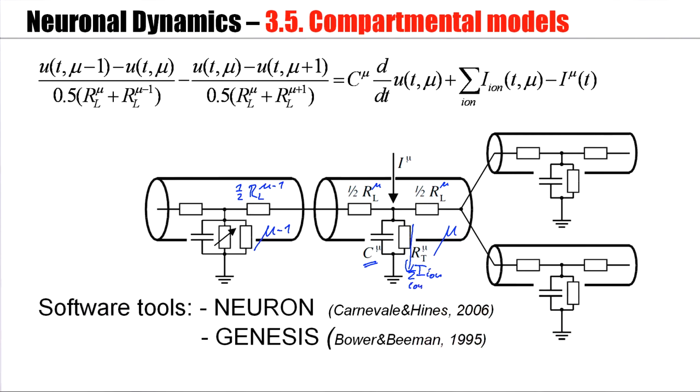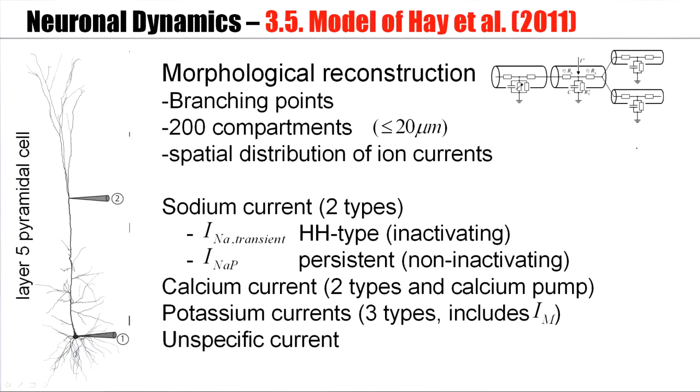Now with this model, we can take the spatial structure of a neuronal dendrite seriously, and also include branching points. So this dendrite may split up in two branches, which are described by separate sequences of segments that are coupled to the main part of the dendrite, and so forth. With this kind of approach, it's possible to give a rather detailed image of the anatomical structure of the dendrite.